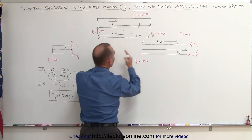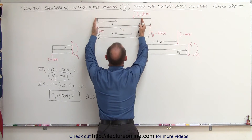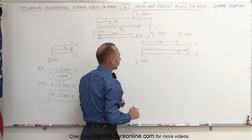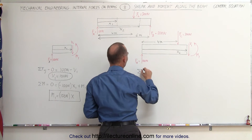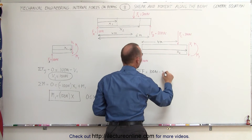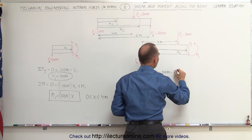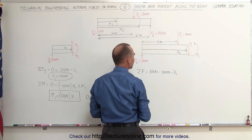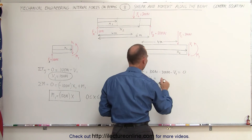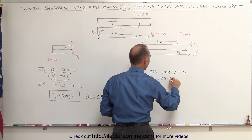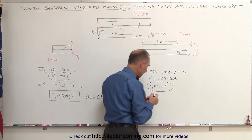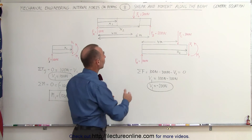Now I extend my left section so its right end goes past the load force. For the sum of forces in the y-direction: 100 newtons upward, minus the 300-newton load force, minus the shear force V1 equals zero. Solving for V1: it equals 100 newtons minus 300 newtons, so V1 equals minus 200 newtons. Again, no dependency on x — it's a constant minus 200 newtons from where the load force acts all the way to the right end of the beam.